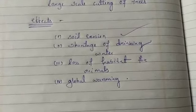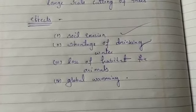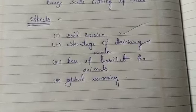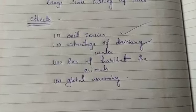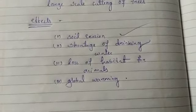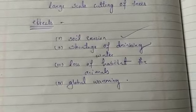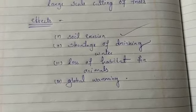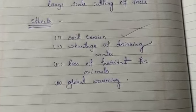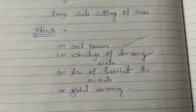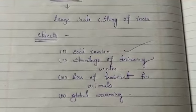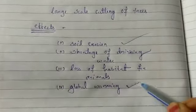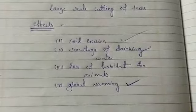Reduced forest cover means there is loss of habitat for many animals. Many animals are losing their habitat, and as a result the existence of most animals is in danger because of human activities like deforestation. Then the most important effect is global warming.